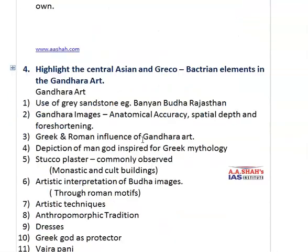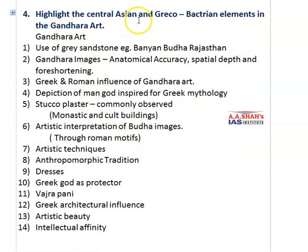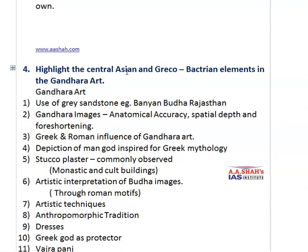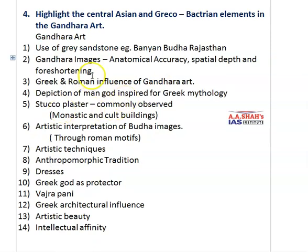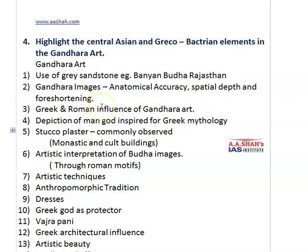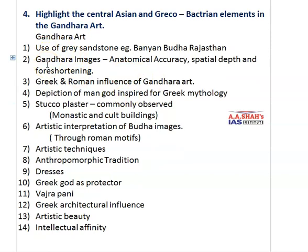Moving to the next question: 'Highlight the Central Asian and Greco-Bactrian elements in the Gandhara art.' Buddhism and Jainism is a very favourite part of UPSC exams — each and every year, not just in mains but also in prelims, questions are asked from Buddhism and Jainism. You should always be ready with these parts of art and culture. You were supposed to write about the basic features of Gandhara art and which features have been derived from Central Asian and Greco-Bactrian elements.